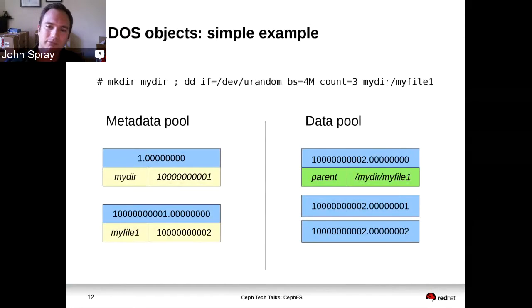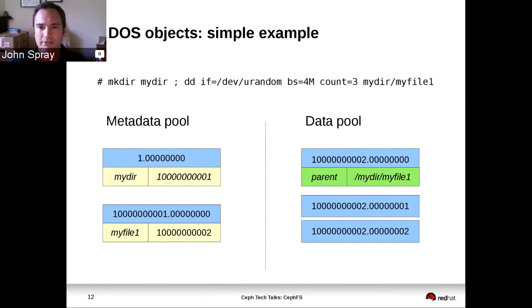In the data pool, the objects just contain the data. The first object in a file has an extra extended attribute called 'parent' that contains the full path to the file at the time it was created, and the use for that will become clear very shortly.